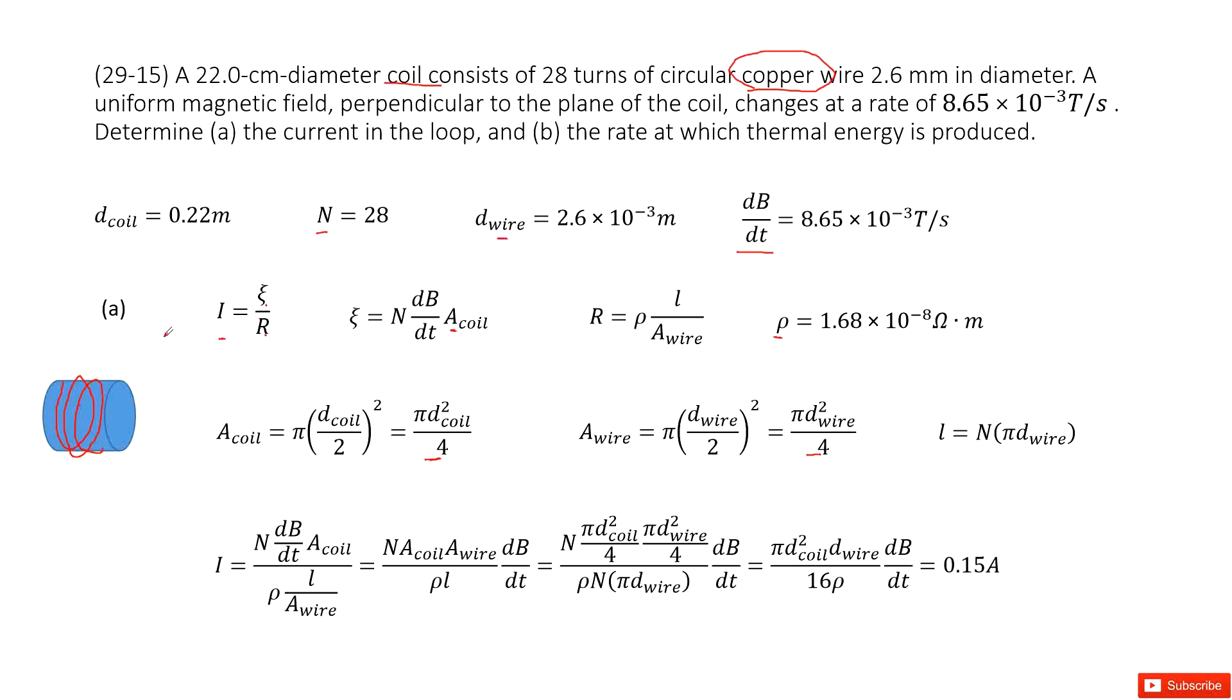Next one, what is the length for this wire? Easy. So we can see how many turns for the wire? 28. And for each turn, for each loop, the length is pi times diameter. That is the length for a loop, pi times diameter for a loop, and then times how many turns? N turns.